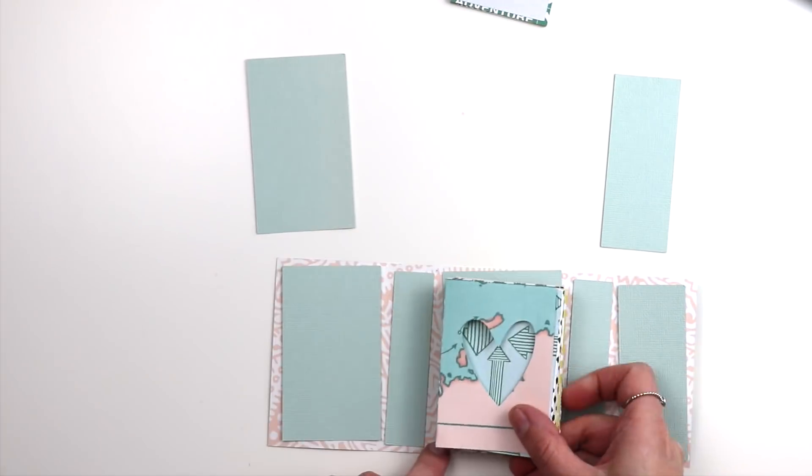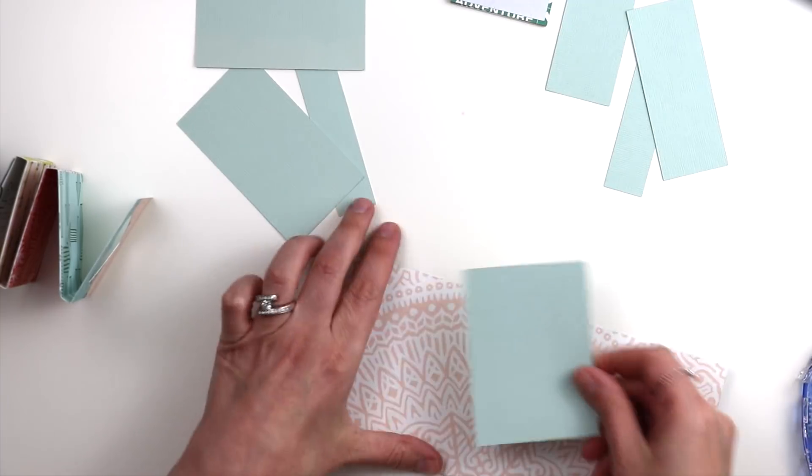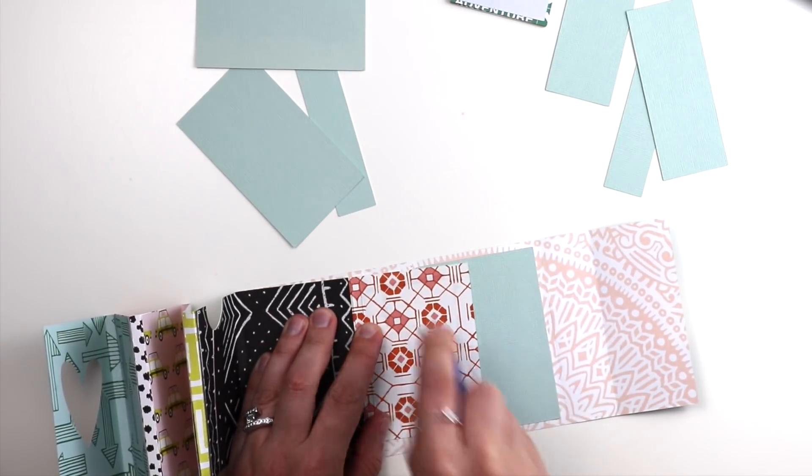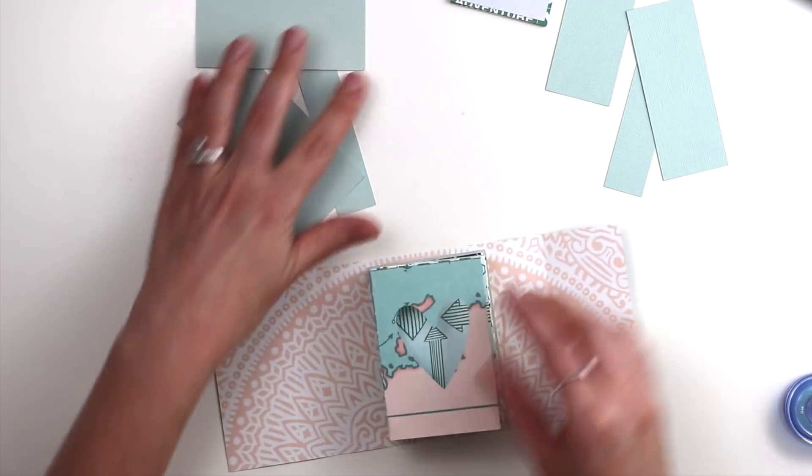This goes in the largest middle section. It's just a layering element. I love having pops of color here and there. So place adhesive on the backside of the accordion mini album and adhere it in place.